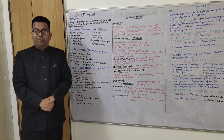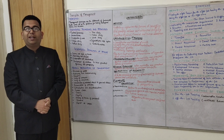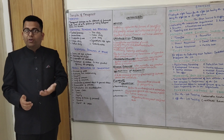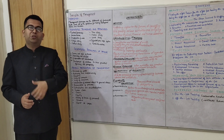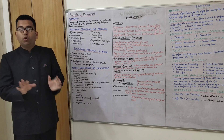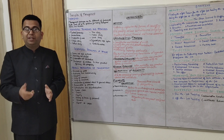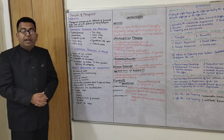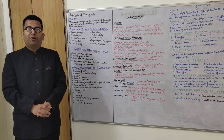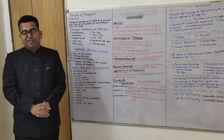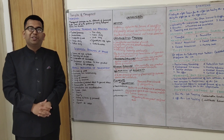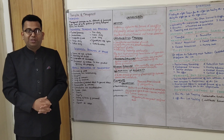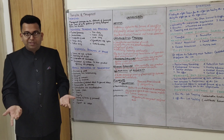Tenth is order: things should be properly placed in the right order so that employees don't find it difficult to locate them. Place things properly so employees don't have a problem finding them, making production easier. Eleventh is equity: treat people equally irrespective of their caste, sex, religion, etc. When we show bias or discrimination it creates an inferiority complex among employees, so treating everyone equally is what equity means.